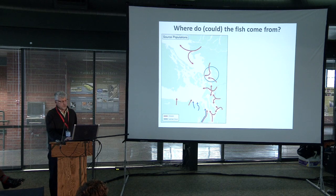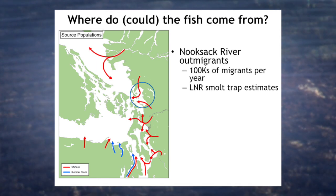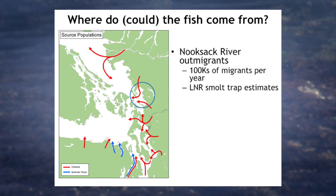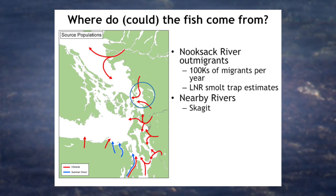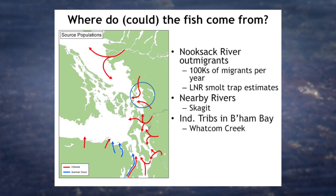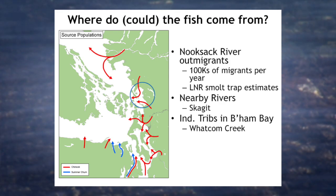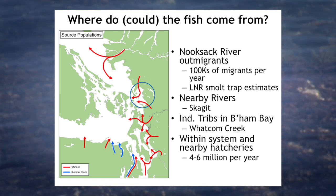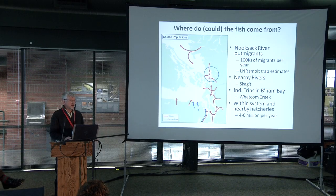Where could the fish come from? Certainly from the Nooksack River, living in the estuary and Bellingham Bay shoreline. Those data are being estimated by Lummi analysts. They could also come from nearby rivers — primarily the Skagit, and we have evidence that is occurring. There's also some evidence that independent trips entering Bellingham Bay produced juvenile fish into the system, along with hatchery fish from in-system and nearby systems such as Samish. Work from 2008 and 2009 showed that fish in the Nooksack estuary were primarily from the Nooksack spring populations. There are four to six million identifiable hatchery fish entering the system over our 10-year data set period.